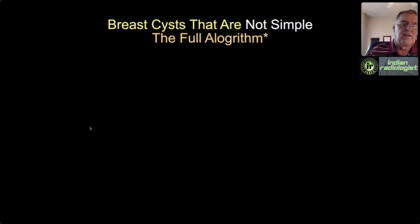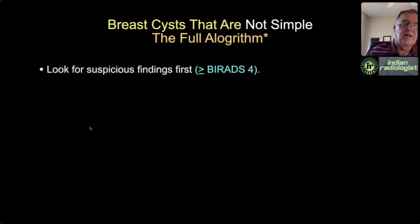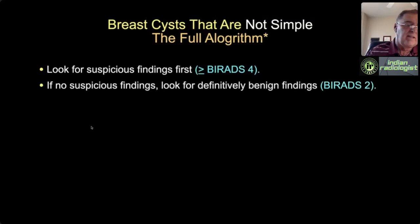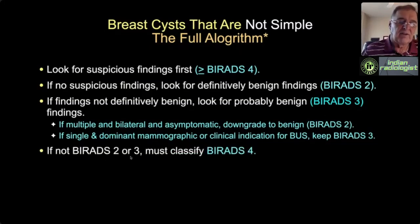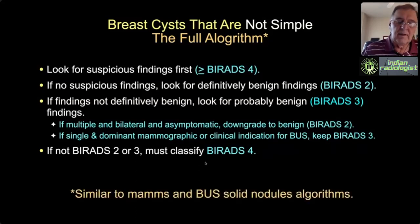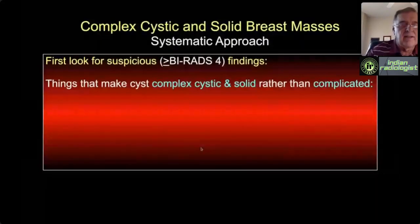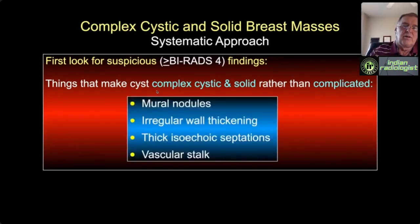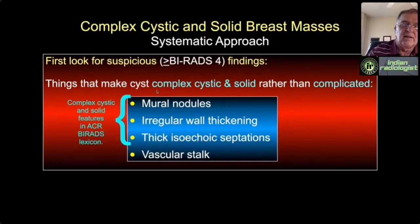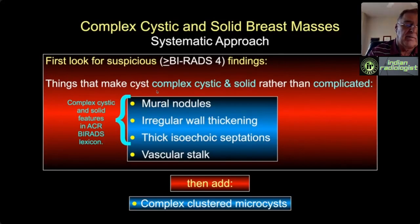Our full algorithm for non-simple cysts is essentially the same as for mammography and solid breast nodules. I look for suspicious findings first. If none, I try to find definitively benign BI-RADS 2 findings. If I can't make it BI-RADS 2, I try for BI-RADS 3 to avoid biopsy. If I can't make it 2 or 3, it's suspicious and I must biopsy it. Suspicious BI-RADS 4 or higher findings include mural nodules, irregular wall thickening, thick isoechoic internal septations, internal vascularity, and certain complex clustered microcysts.